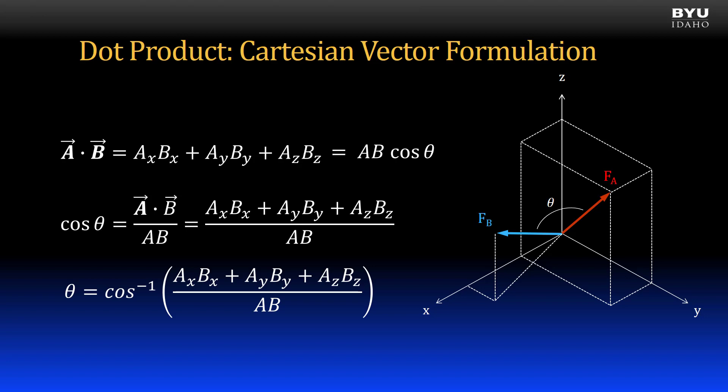So stated simply, theta is the inverse cosine of the dot product of vectors A and B divided by the product of the magnitudes of those vectors. The following videos provide numerical examples using the dot product.